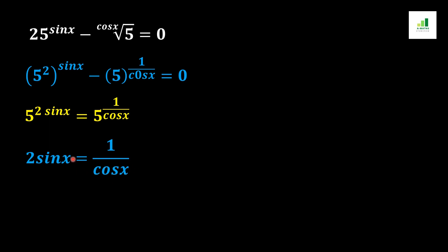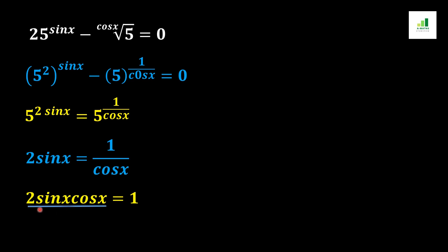In the next step, cos x moves to the other side of the equation and multiplies with 2 sine x, giving us 2 sine x cos x equals 1. From the basic rule of trigonometry, 2 sine x cos x equals sine 2x, so we get sine 2x equals 1.